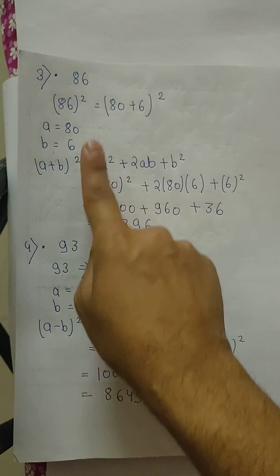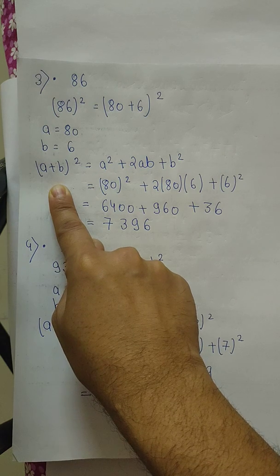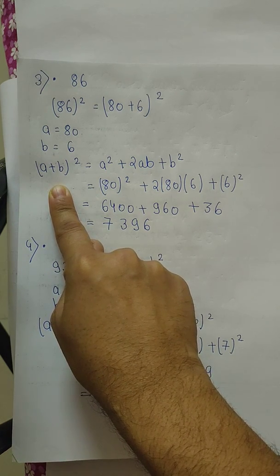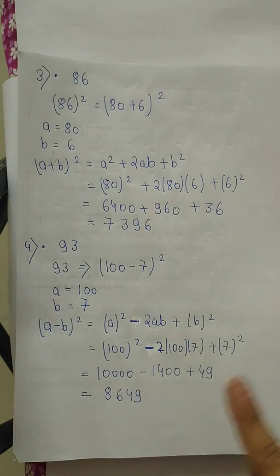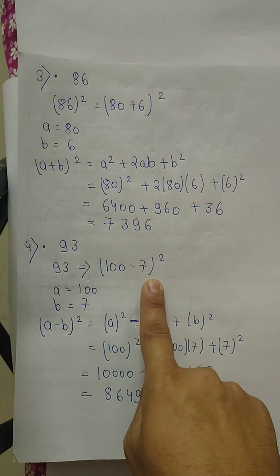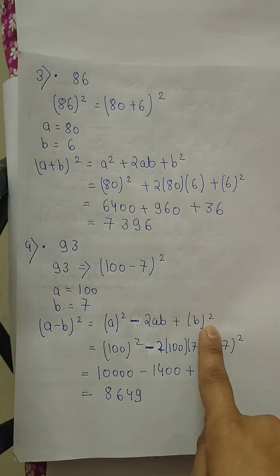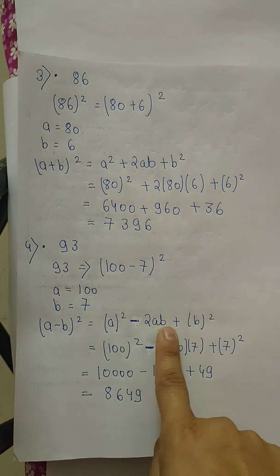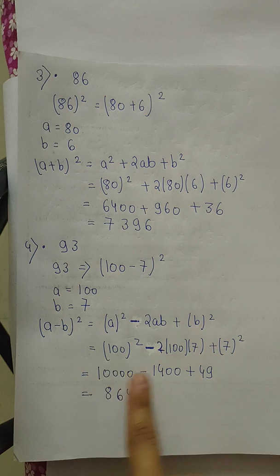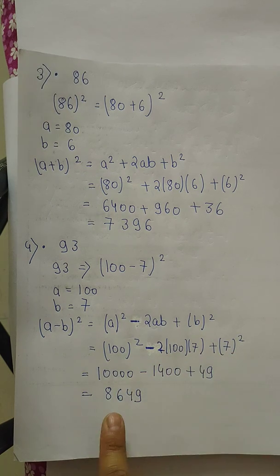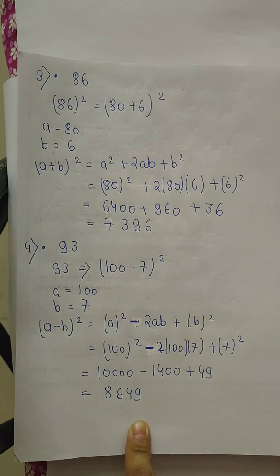You can write whichever you want. For 93, I have written 100 minus 7. I have to use (a-b)², that is a² - 2ab + b². 100² - 2(100)(7) + 7². We find all the values, and after subtraction and addition we get 8649, which is 93 ka square. Hope you will do question number one on your own.